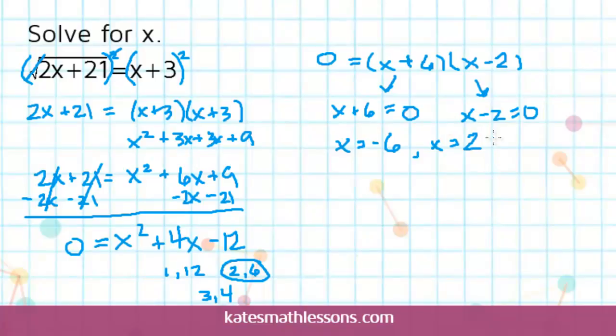Now the next most common mistake that students make is they get to this point here and they say, okay I'm done, here are my two answers. The problem is that when you're solving a radical equation, sometimes you end up with what's called an extraneous solution.